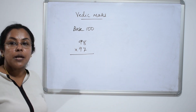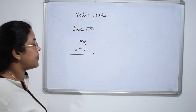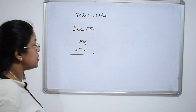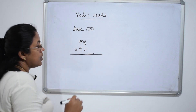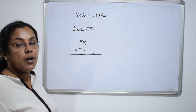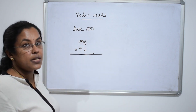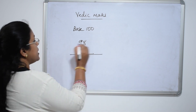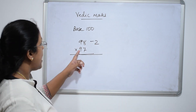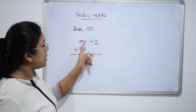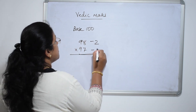Suppose we want to multiply 98 and 97. First of all, take the deviations from 100. What is the difference between 100 and 98? 98 is 2 less than 100, so write minus 2. And 97 is 3 less than 100, so write minus 3.